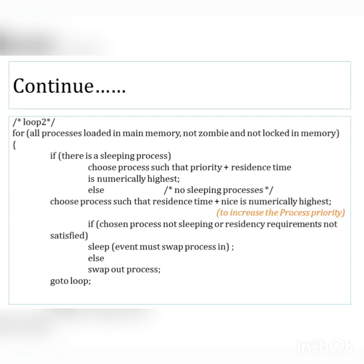The algorithm then checks all processes loaded in main memory — those that are not zombies and not locked in memory. For sleeping processes, it chooses the process with the numerically highest priority plus residence time. For non-sleeping processes, it picks the process with the highest residence time plus nice value. The nice system call increases or decreases process priority. If the chosen process's residence requirement is not satisfied, it is skipped; otherwise, the process is swapped out and the loop continues.